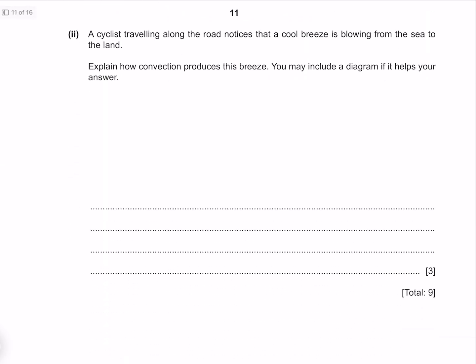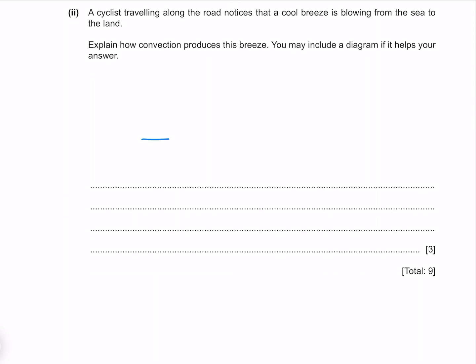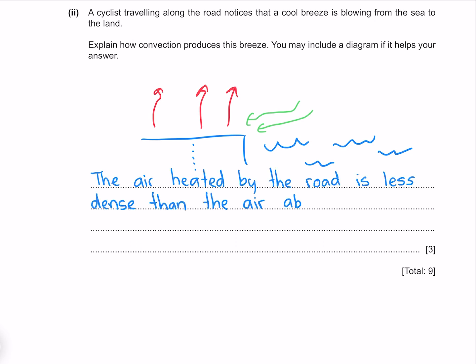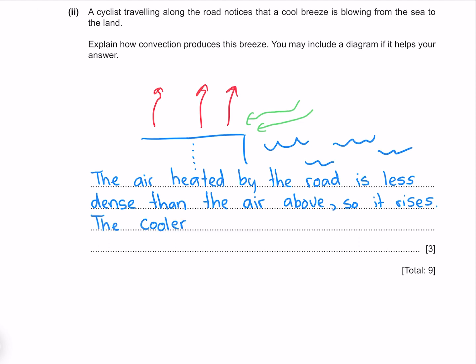A cyclist traveling along the road notices that a cool breeze is blowing from the sea to the land. Explain how convection produces this breeze. You may include a diagram if it helps your answer. Drawing the road in our diagram and the ocean, our hot air rises because it's become less dense to be replaced by the cooler, denser sea air. So let's write that down. The air heated by the road is less dense than the air above, so it rises. The cooler, denser sea air blows in to replace it.